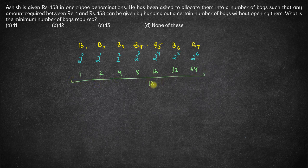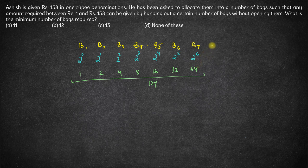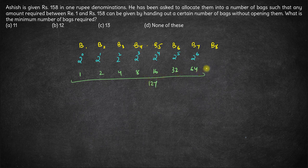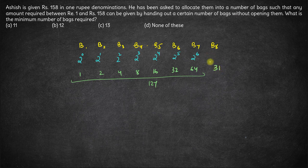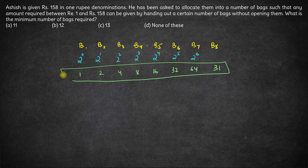So far a total of 127 coins have been put in these bags. The remaining coins - how many are remaining? 158 minus 127 is 31. So the remaining 31 coins can be placed in the remaining 8th bag. Now if you have bags with these coins, any amount can be given between 1 to 158.